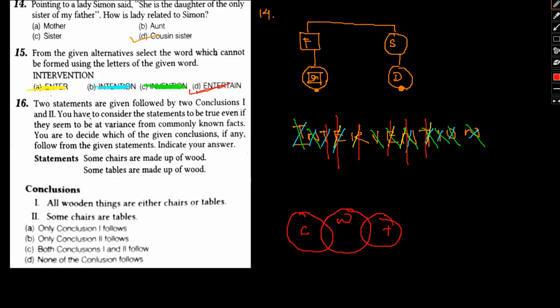All wooden things are either chairs or tables? No, we cannot say. There can be an almirah also, there can be a cupboard also. Anything can be. So all wooden things are either made of chairs or wood - it is a wrong statement. It does not follow. Some chairs are tables? No. From this diagram you can see, no chairs are tables. Chair and table are totally exclusive. So this also does not follow. Option D will be the correct answer.